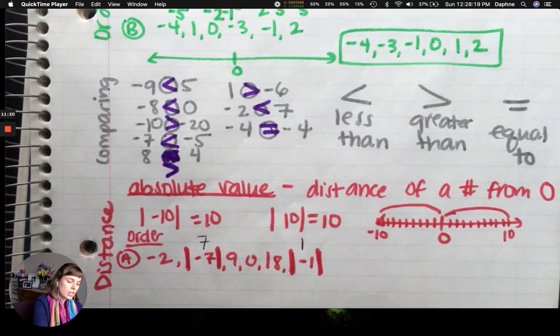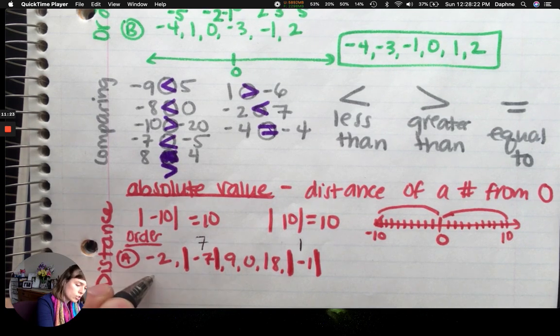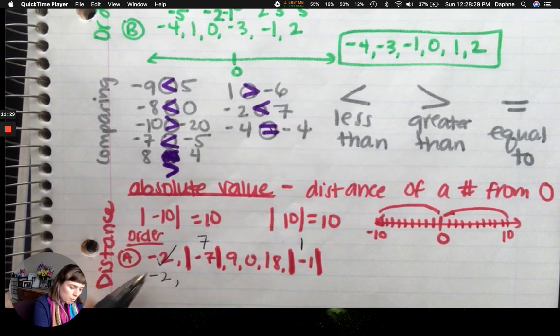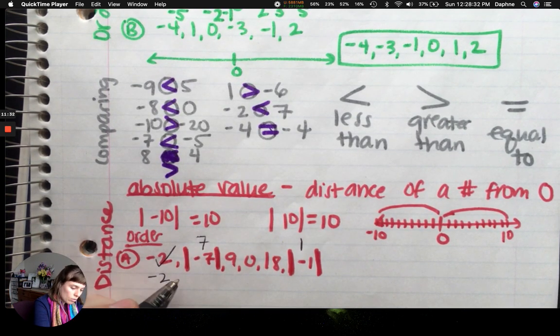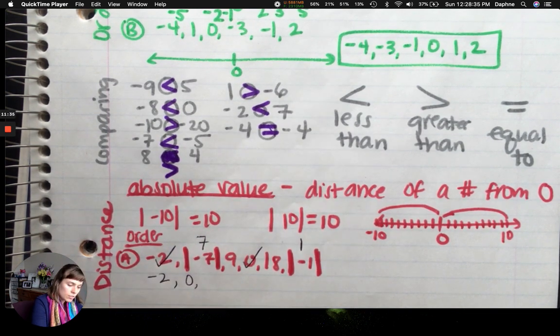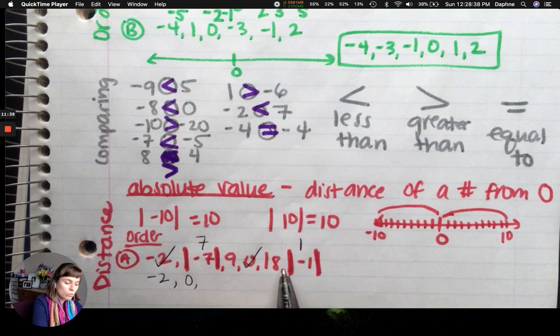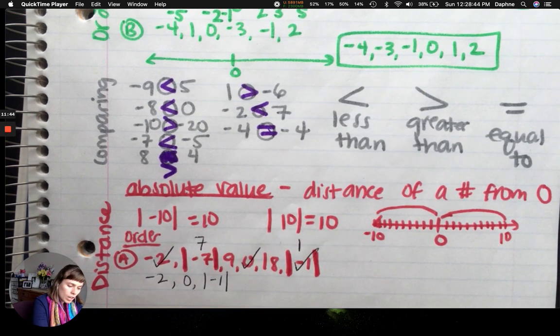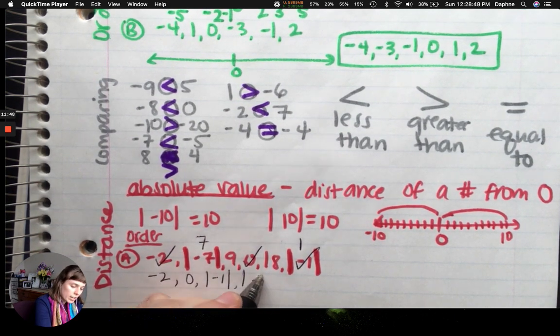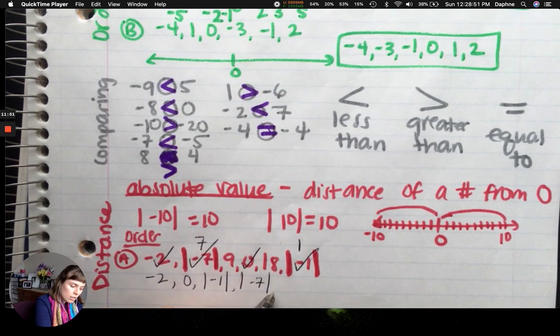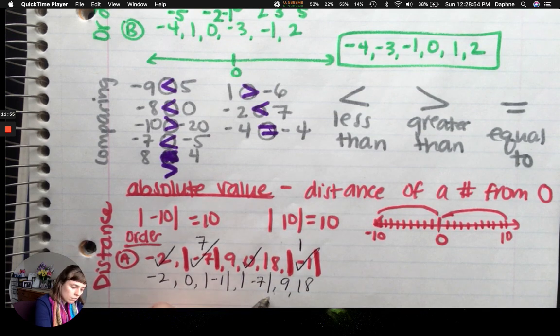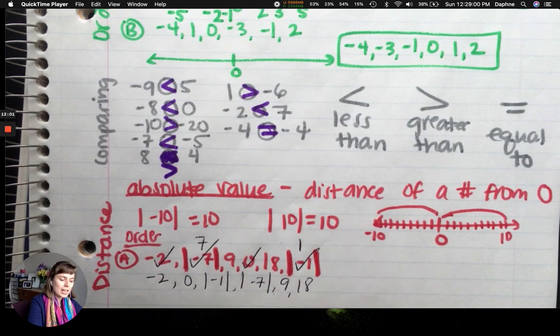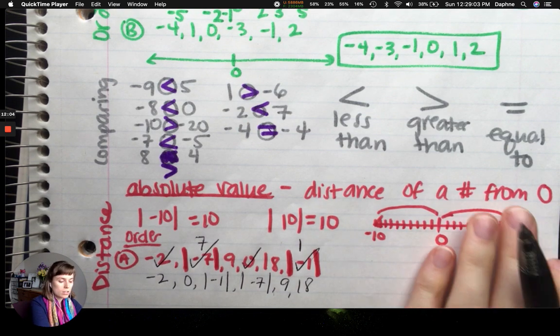So when I reorder this, the smallest number I see is the negative two. I'll write it down here. Negative two. The next number I see is zero. After zero comes one, but I don't want to write one. I'm actually writing the number it gave me. So I'm writing the absolute value of negative one. After that comes seven, but again, absolute value of negative seven. Then I do nine and then I do eighteen. So notice how I rewrote this from least to greatest in the original format that there is.